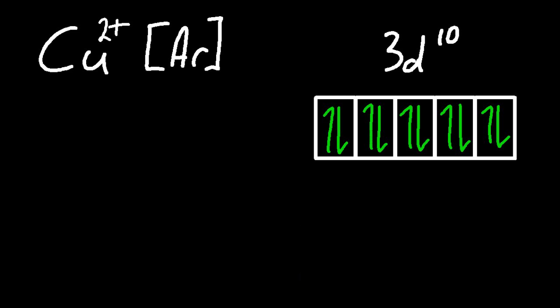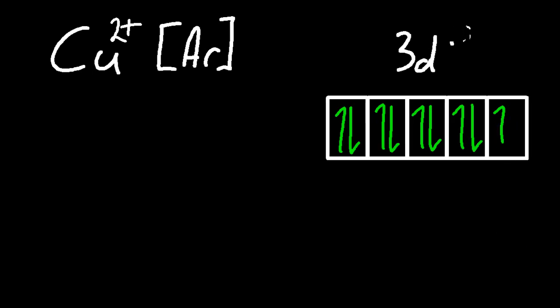And copper two plus. That doesn't really fit with the pattern I said before, that a full d orbital is stable. But that's one of the exceptions. The IB knows this, I won't ask you about it. Thank you.